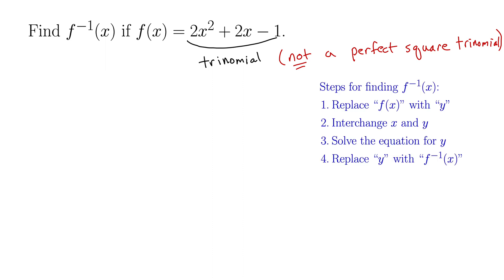Let's start with our steps for finding the inverse of a function. We start with replacing f of x with y. So we have y equals 2x squared plus 2x minus 1.